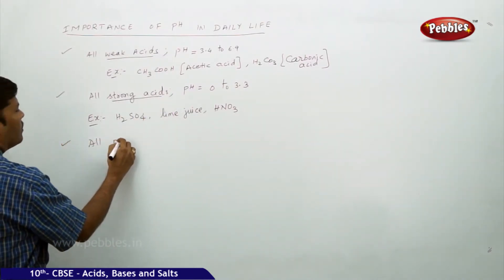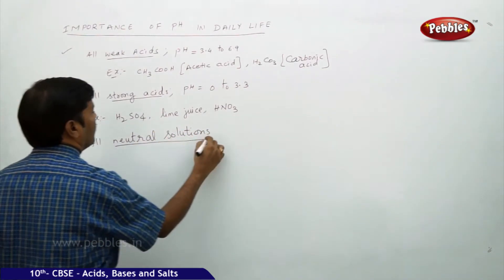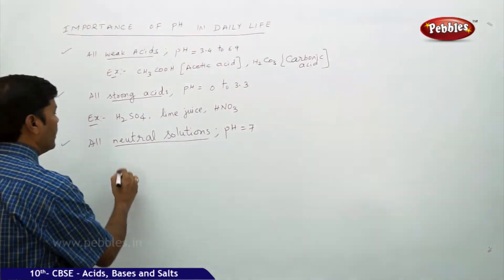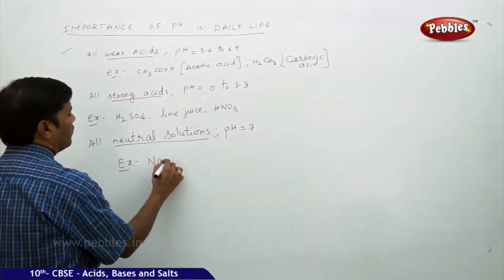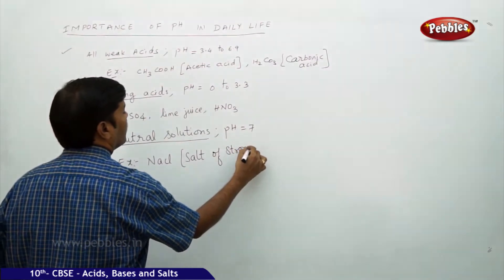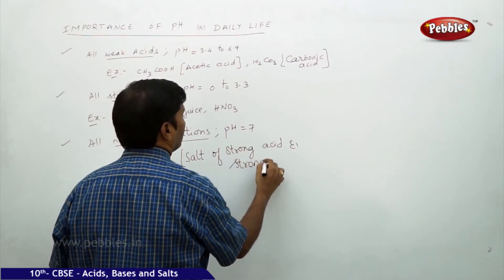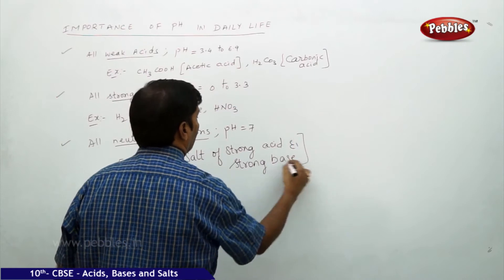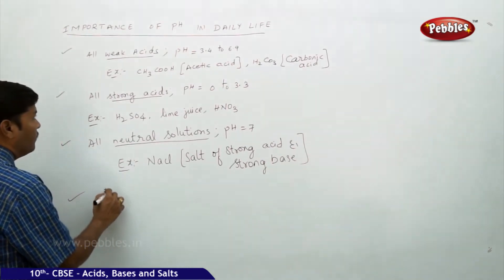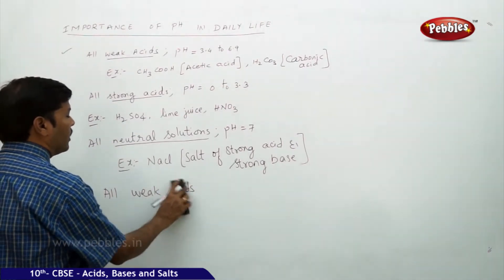For all neutral solutions, the pH is equal to seven. An example is sodium chloride, which is a salt of a strong acid and a strong base.